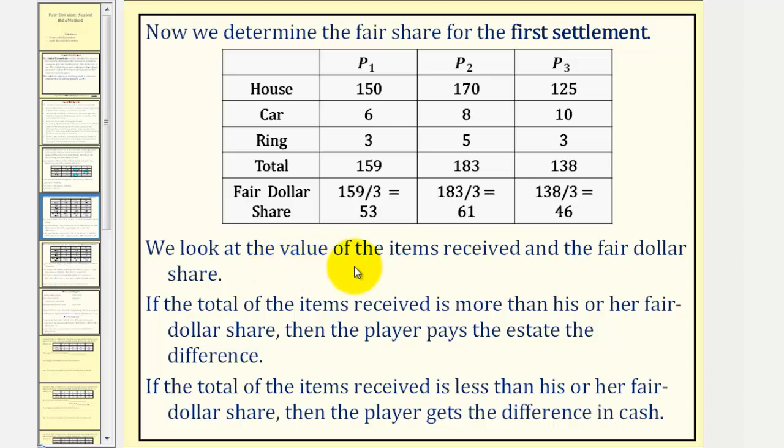Now we look at the value of the items received and the fair dollar share. If the total of the items received is more than his or her fair share, then the player pays the estate the difference. If the total of the items received is less than his or her fair share, then the player gets the difference in cash.